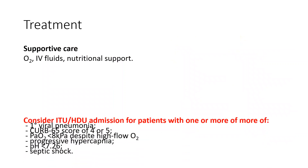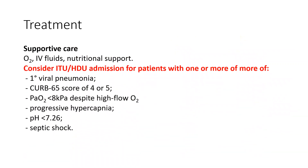Treatment is supportive care with oxygen, IV fluids, and nutritional support. We consider the need for ICU when there is primary viral pneumonia, a high CURB score, or hypoxia despite high-flow oxygen.